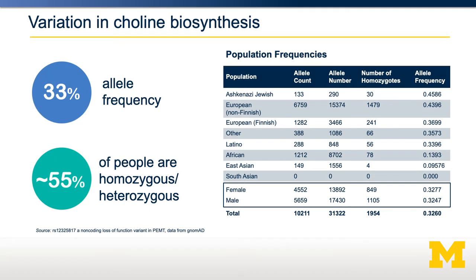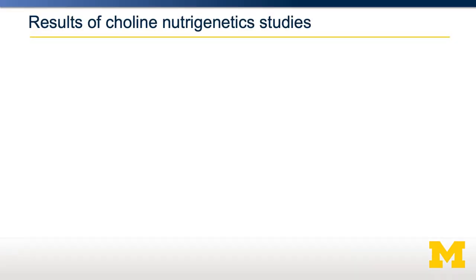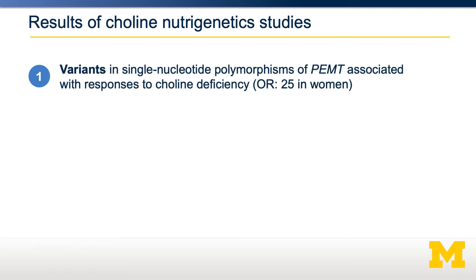It turns out there are quite a few variants in PEMT. Shown here is a non-coding loss of function variant in PEMT. As you can see, this is actually quite common — it exists in about 40% in some populations, but is quite rare, being barely present in other populations, including East Asian and South Asian populations. The hypothesis is that people who had variants resulting in loss of function in PEMT would be more susceptible to choline deficiency. That's exactly what they found — an astonishing 25-fold increased odds ratio for women with variants in PEMT to be responsive to choline deficiency, including fatty liver disease and muscle weakness.